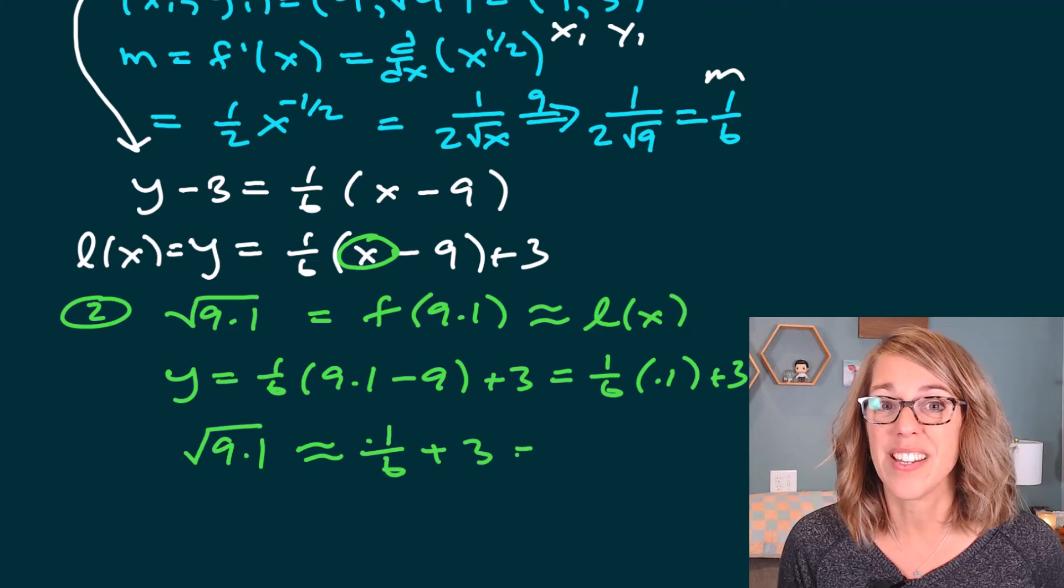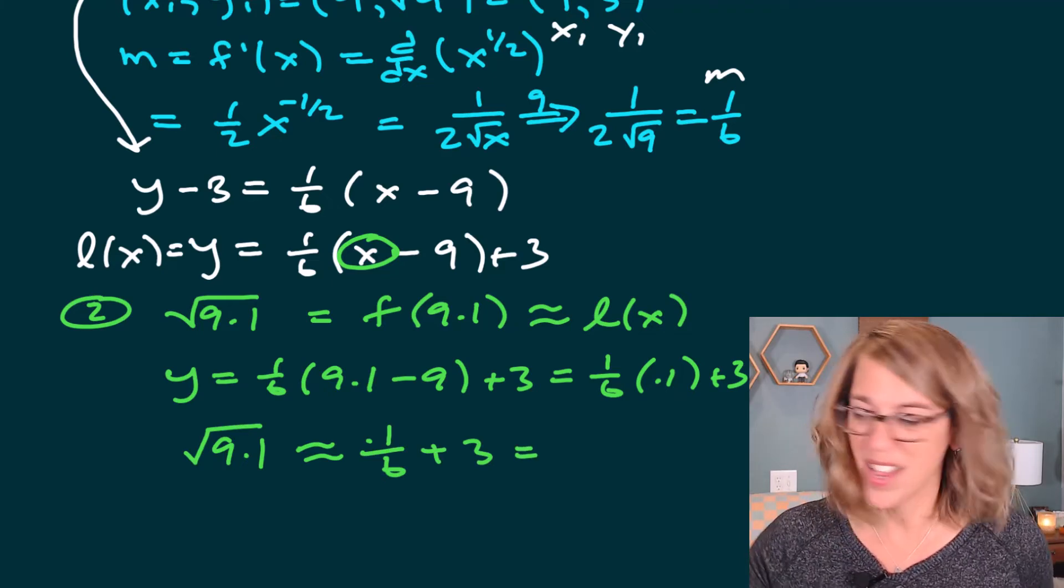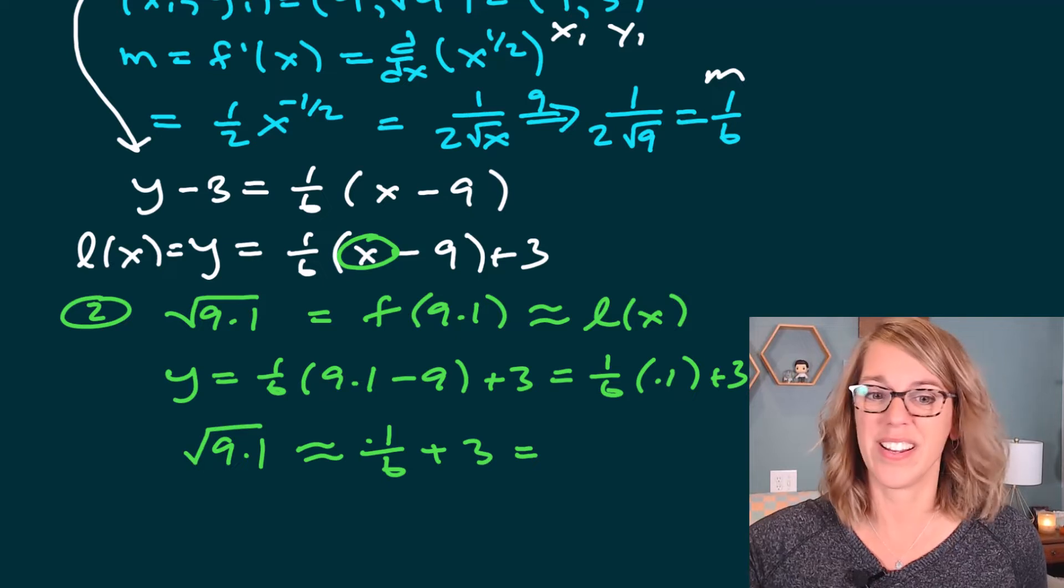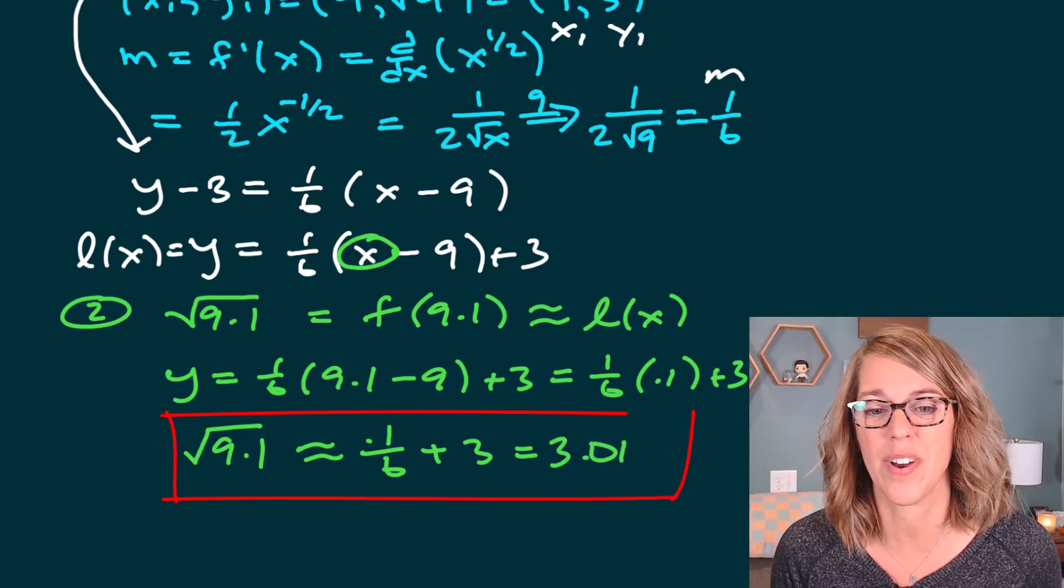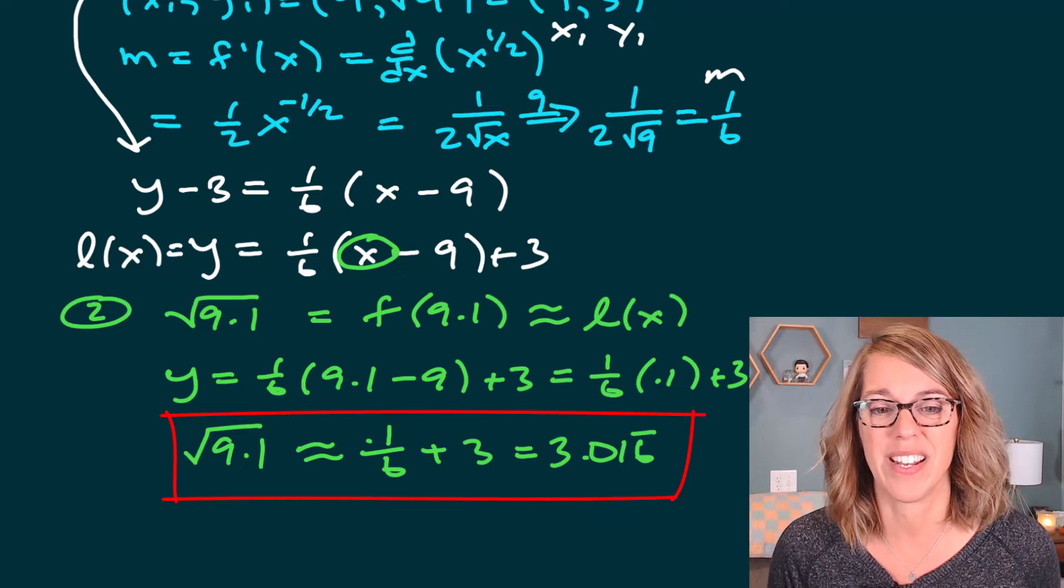And when I put that into my calculator, I end up with 3.0166666 repeating. So 3.0166 repeating.